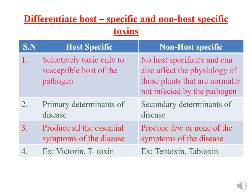The key differences: host-specific toxins are selectively toxic only to the susceptible host, whereas non-host-specific toxins affect physiology of plants not normally infected by the pathogen. Host-specific toxins are primary determinants of disease; non-host-specific toxins are secondary determinants. Host-specific toxins produce all the essential symptoms of disease; non-host-specific toxins produce few or none of the symptoms. Examples of host-specific toxins: victorin and T-toxin; non-host-specific: tentoxin and tabtoxin.